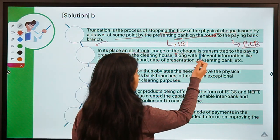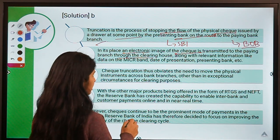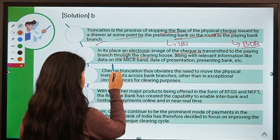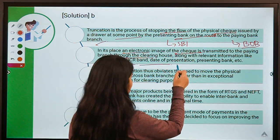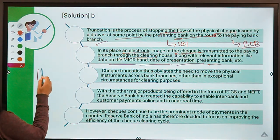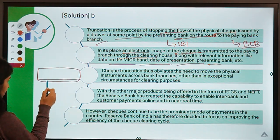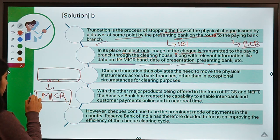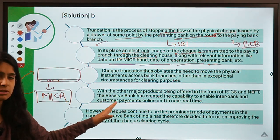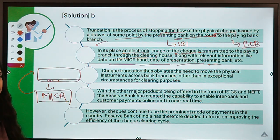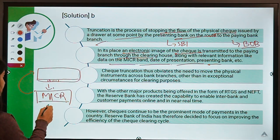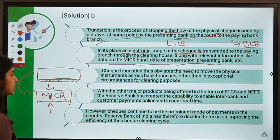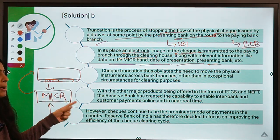In place of the physical check, an electronic image is created and transmitted to the paying bank through the clearing house. Other relevant information is also sent, such as the MICR band on the check, the date of presentation, and the presenting bank details. Before CTS, MICR alone was used to verify all details; now MICR has become part of the Check Truncation System.